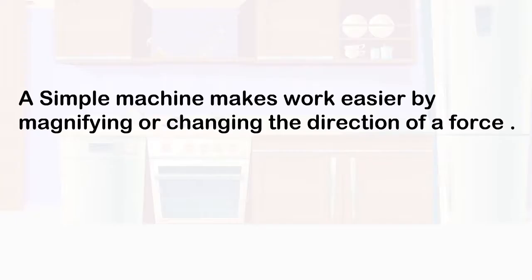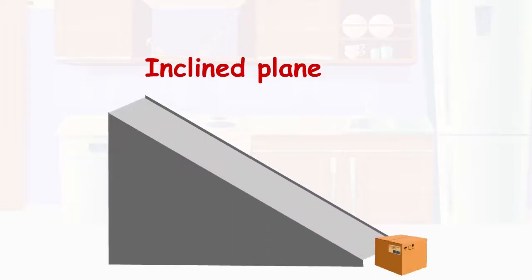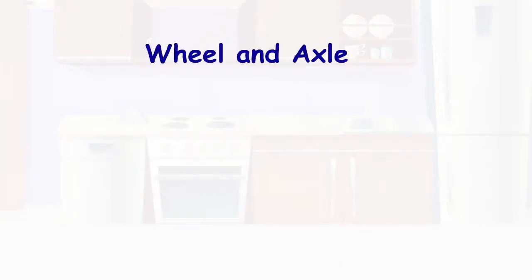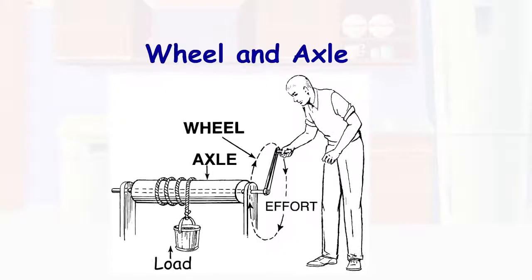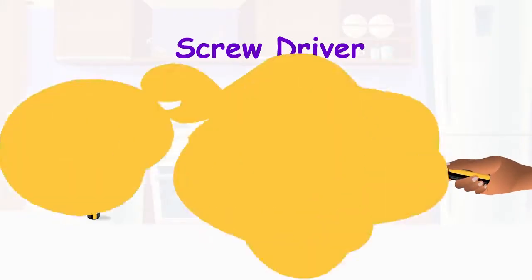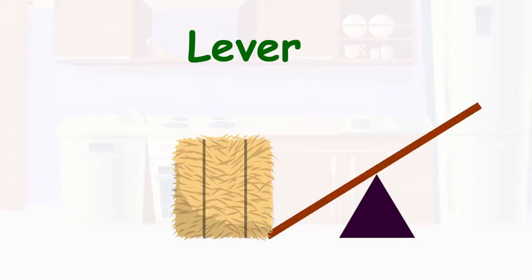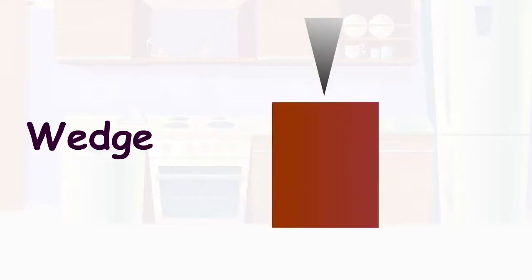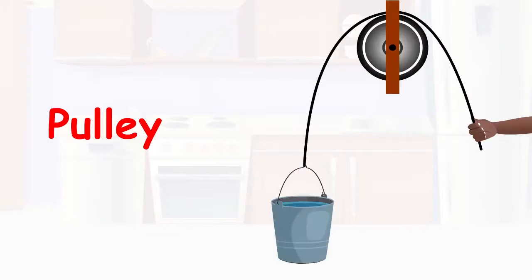It reduces the energy needed for work. Machines include the inclined plane, which helps us lower loads gradually. A wheel and axle used to lift a load. Screwdrivers are used to tighten or loosen a screw. Lever is used to lift a load. Wedge is used to split an object and a pulley, which is used to lift a load.